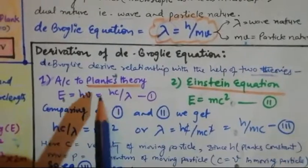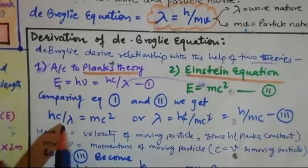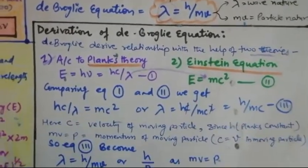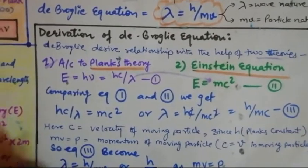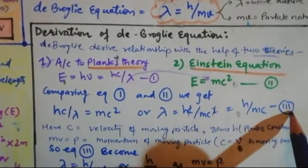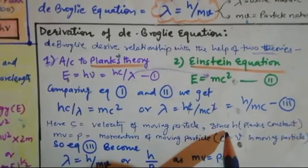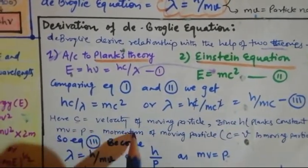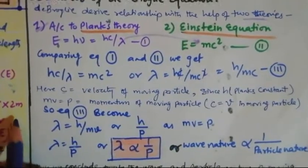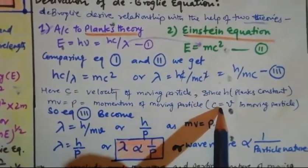By comparing both equations we can write: hc/λ = mc². Rearranging, lambda = hc/mc², where c cancels with c, giving lambda = h/mc. This is equation 3, where c is the velocity of the moving particle, h is Planck's constant, and mc (or mv) is the momentum of the moving particle. So equation 3 becomes lambda = h/mv, replacing c with v since both represent velocity.